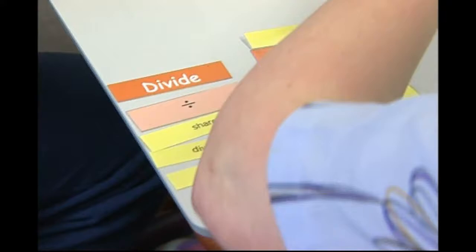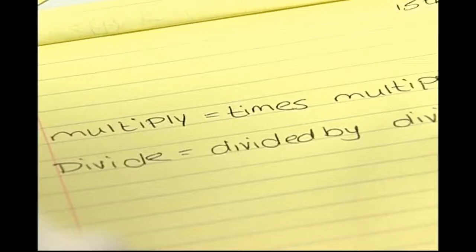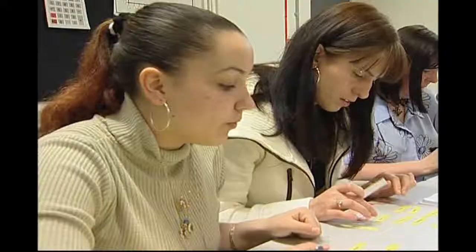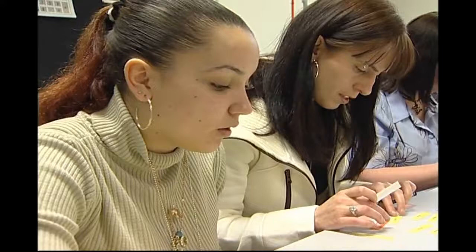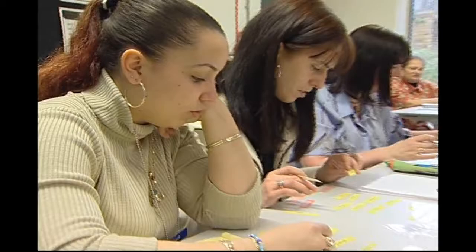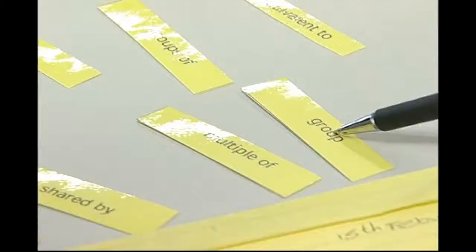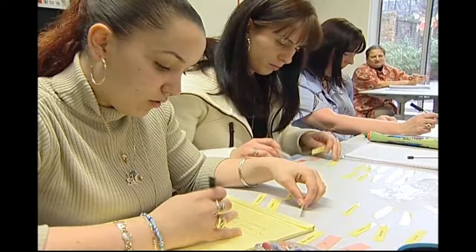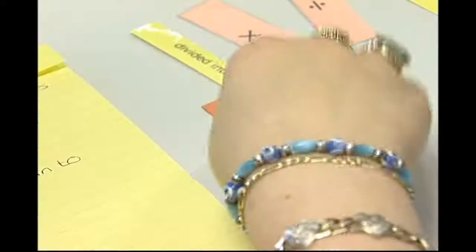You okay, Sonia? Some of them I'm not sure about. Which words then? Groups and groups. Shall we put the ones that you're unsure about to one side, and put the ones that you are sure about together, and then we'll discuss them as a group? Which ones have you put with the divide sign so far? Multiplies, times.